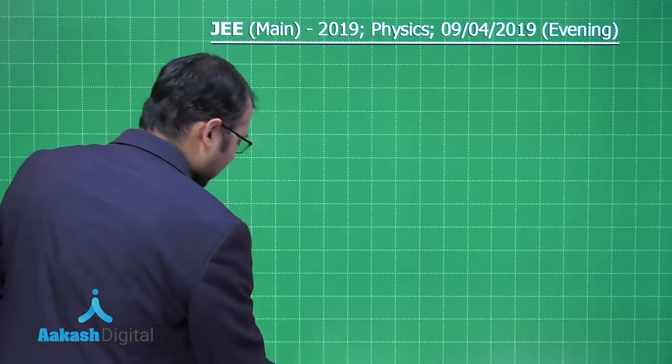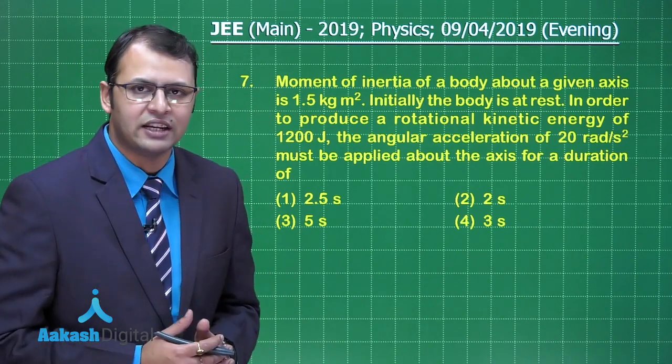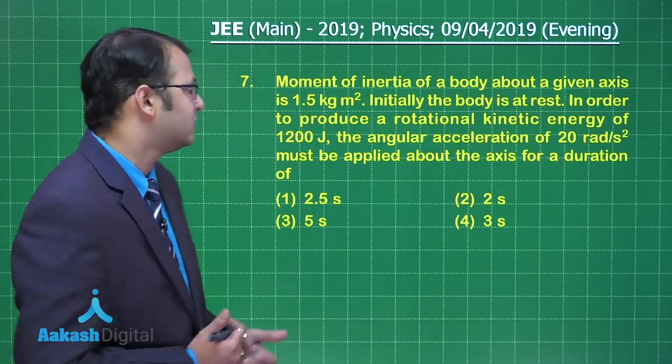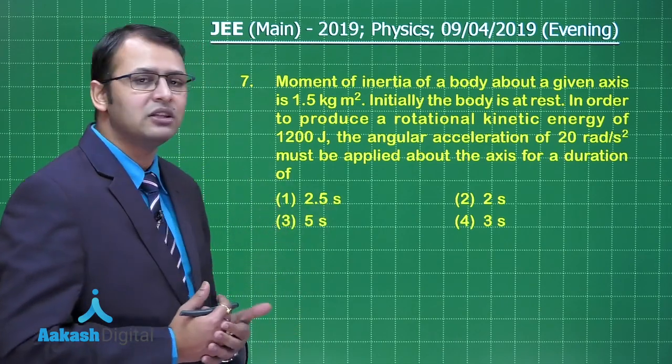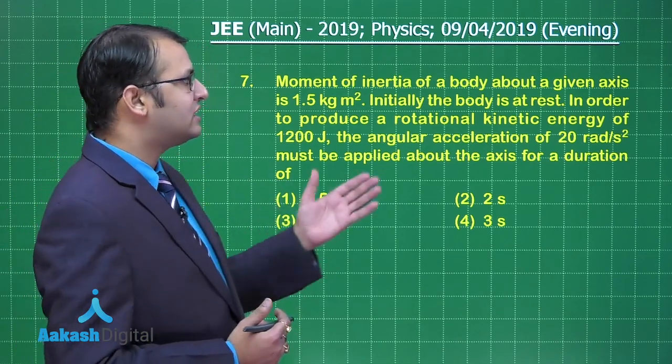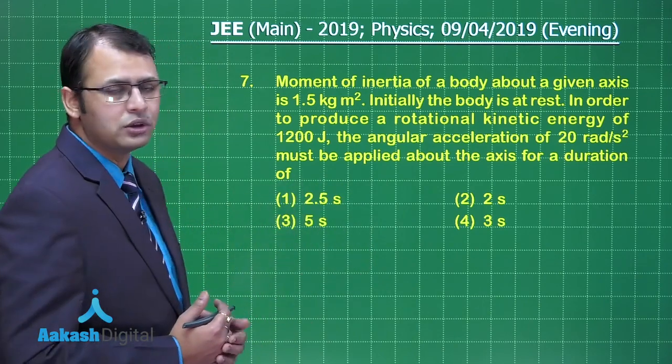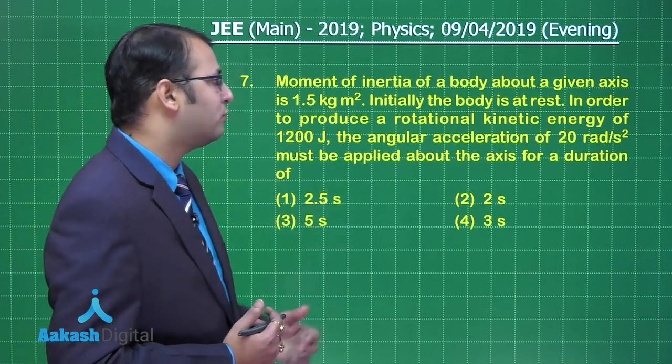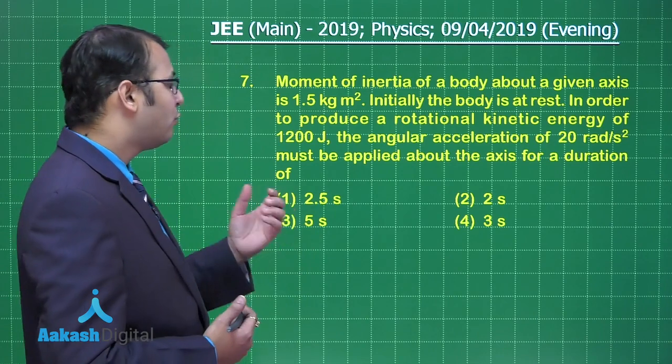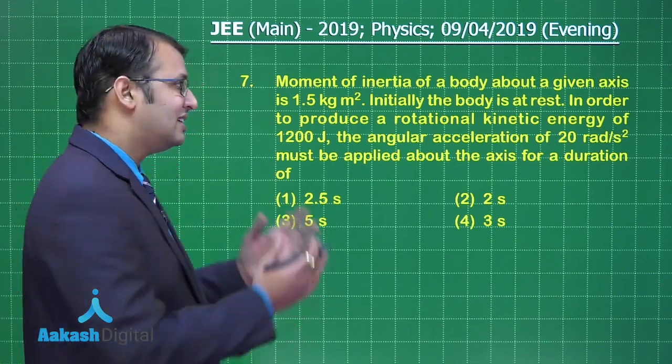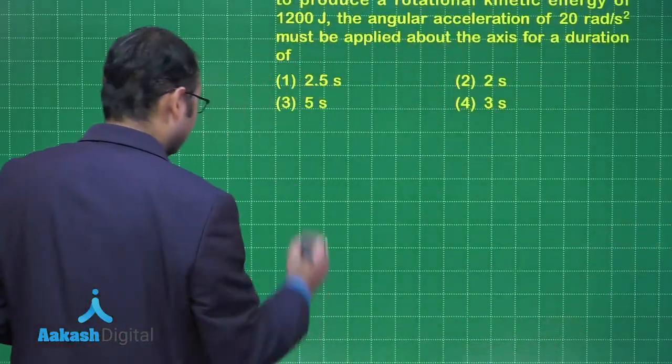So friends, let's take our next question, that is question number 7. The question you see here belongs to the section of mechanics from the chapter system of particles. Here, the moment of inertia of a body about a given axis is 1.5 kg meter square. Initially the body is at rest. In order to produce a rotational kinetic energy of 1200 joules, the angular acceleration of 20 radian per second square must be applied about the axis for a duration of... so we need the time for which this acceleration should be provided. So let's start with the solution.